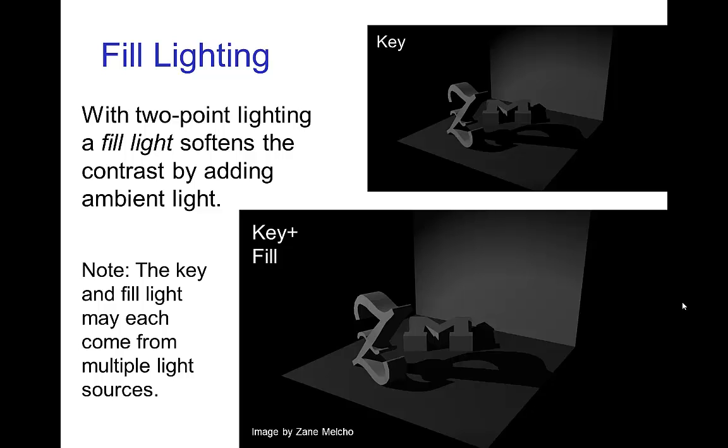Now we can have a two-point lighting if we have besides the key light, have another light source which adds some ambient light and this helps to reveal parts of the scene which would be lost in shadow because of the having only a single key light.